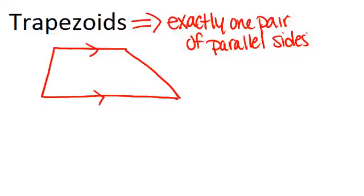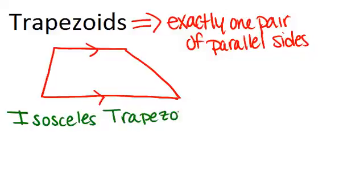The trapezoid doesn't have many special or interesting properties, but there is a special type of trapezoid called the isosceles trapezoid, which does have some properties. If you remember the word isosceles from isosceles triangle, you'll remember that it has to do with two sides being the same length.